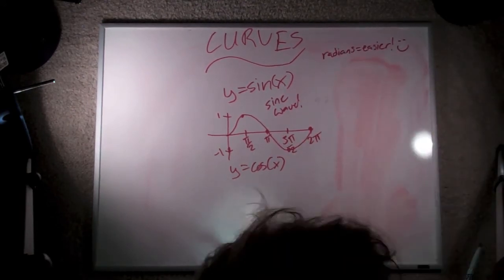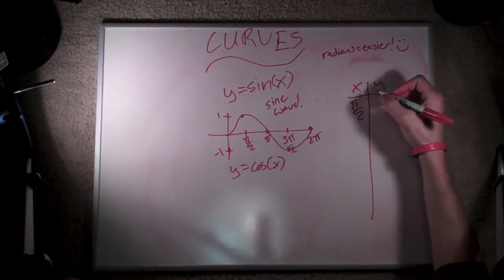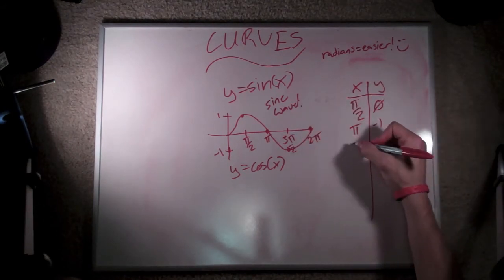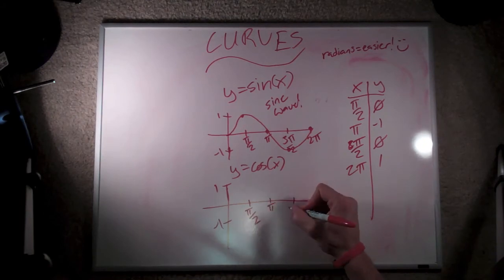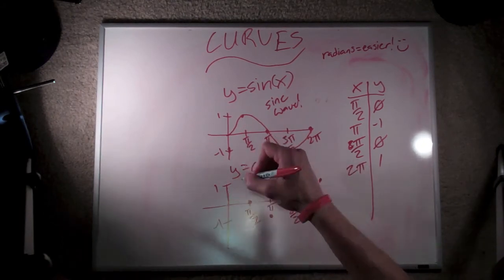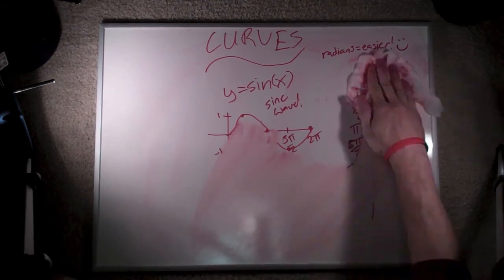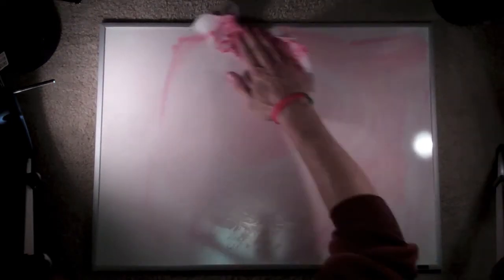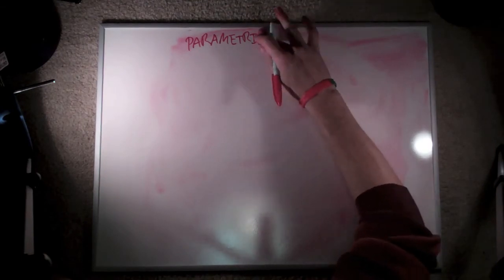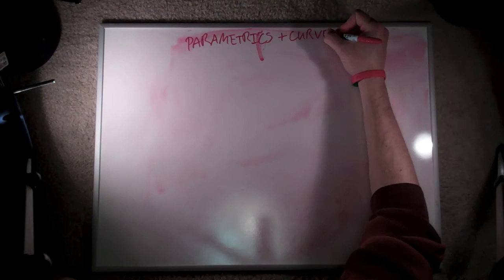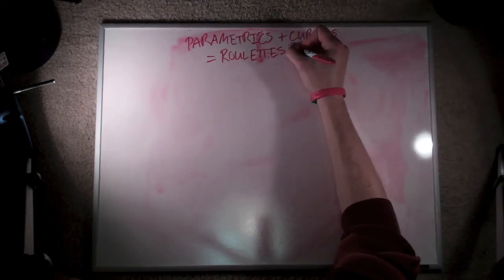Now let's go to a similar function, y equals cosine x, and graph that out. I'm going to fast forward through laying out all the different variables because I know it's kind of boring. Suffice it to say, I don't get the exact same results for cosine x that I got for sine x. The reason being that this is a curve that winds up being offset a little bit from sine x — it's a little bit out of phase. But this is actually a good thing, because when we take both of these ideas and put them together — our parametrics and our curves — we have the opportunity to create much more complex curves. In fact, we create types of curves that are called roulettes.